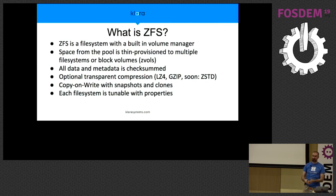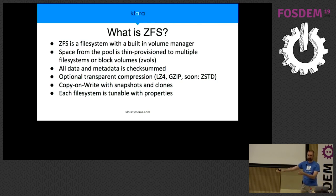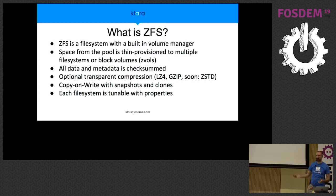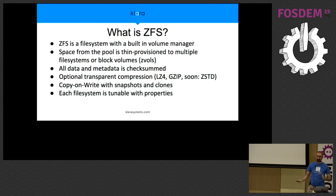One of the reasons it can do this is because it's copy-on-write. If you're in the middle of updating a file when the system crashes, you've not overwritten half the file because you're always writing the data to the new place, so the original version of the file still exists. To make administration easier, each file system has a set of properties that allow you to control various things, like whether it uses compression, and these are inherited as you create child file systems.